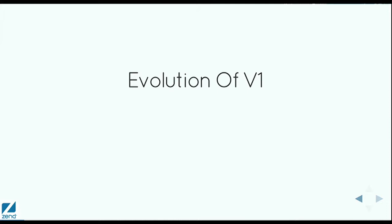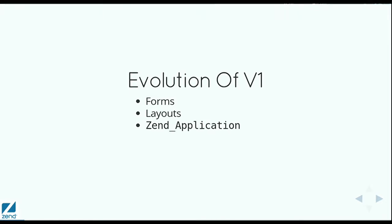It evolved a lot over the years. I came on in 2007 full-time. I had helped spearhead the MVC rewrite for version one the year before. We had a very nice version one, but over time it evolved into the really nice framework that it became. We added first forms, and that was one of the first major form libraries that actually worked well, and had things like translation built into it, which was a novel concept at the time. We eventually added layouts, because everybody wanted to do that. Magento had been bugging us forever, and then they didn't use it. But we finally got to an even better architecture when we introduced a Zend Application, and I think that was around 1.8 or 1.9.